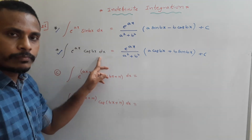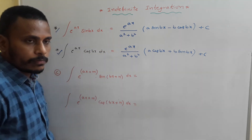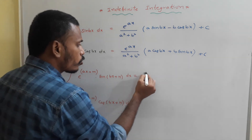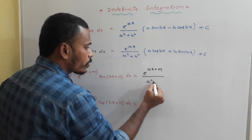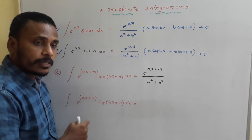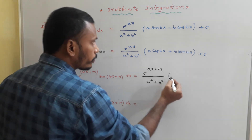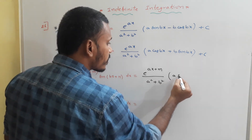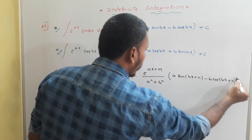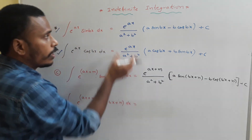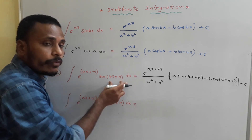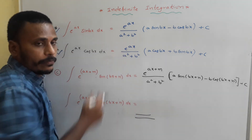Keeping these two formulas in mind, note the generalization: integral of e^(ax+m)·sin(bx+n)dx = e^(ax+m)/(a² + b²)·(a·sin(bx+n) − b·cos(bx+n)) + c. The result for e^(ax)·sin(bx) transforms to e^(ax+m)·sin(bx+n) simply by replacing ax with ax+m and bx with bx+n throughout. You can similarly write the cos version using the second formula.